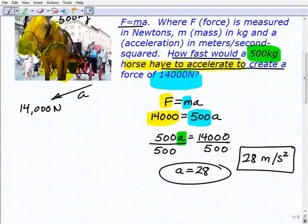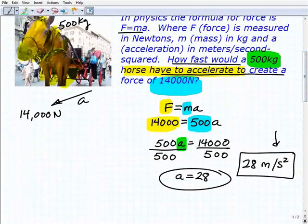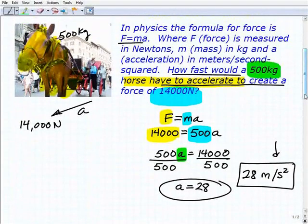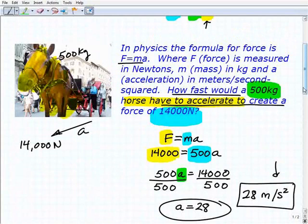So when you're solving a word problem that has units of measure involved, whether it's newtons, inches, feet, miles per hour, always make sure you add in the proper unit of measure. So this horse is going to have to go 28 meters per second squared to reach a force of 14,000 newtons. And if you think about that, 28 meters per second squared, that's pretty fast. So, this horse's day is going to go from bad to worst, and of course, we all feel sorry for the horse.